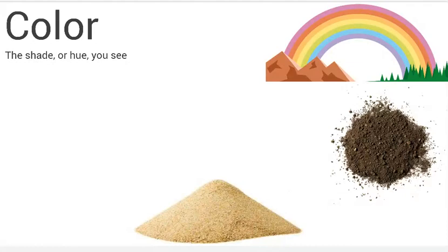The first property of soil that we need to talk about is color. Color is the shade or the hue that you see. By now we're all familiar with all different types of colors — the colors of the rainbow like ROYGBIV: red, orange, yellow, green, blue, indigo, violet — and there are so many more in between. What we're going to do for our first part of the properties of soil is being able to identify the color. The color becomes important because it really gets to, on a fundamental scale, what our soil is comprised of, composed of, what it is made up of.